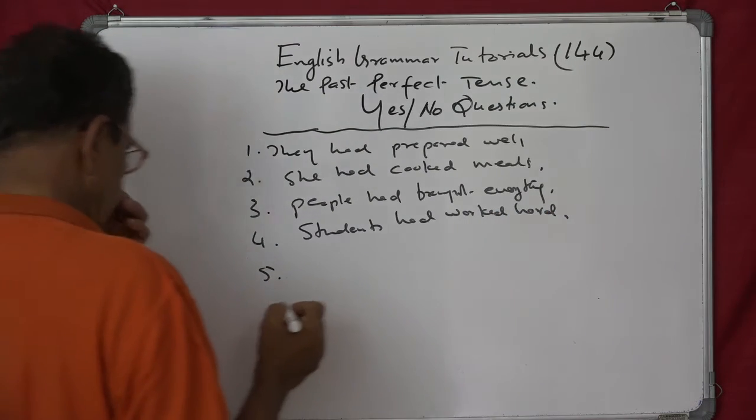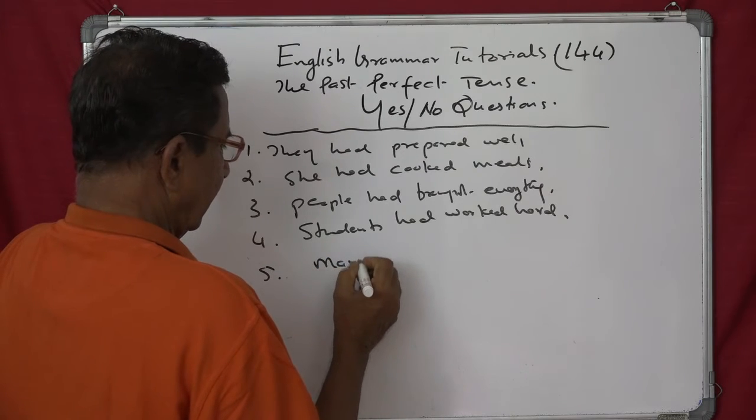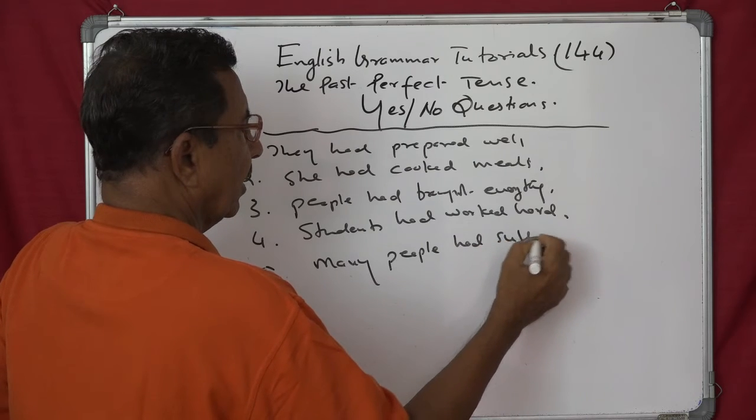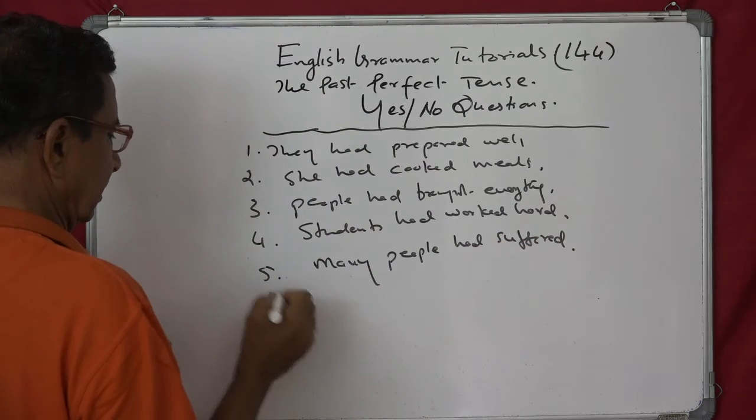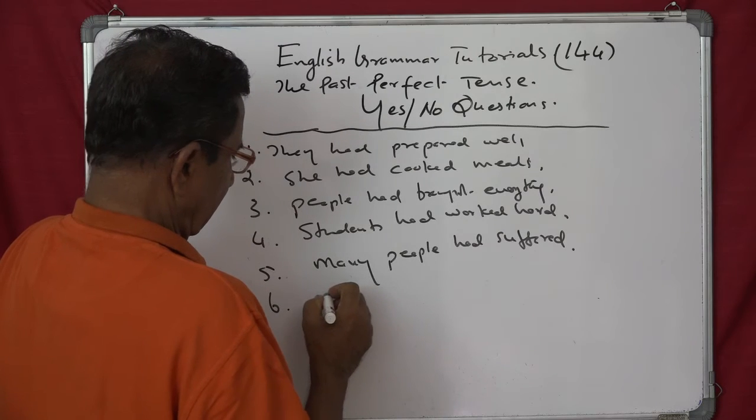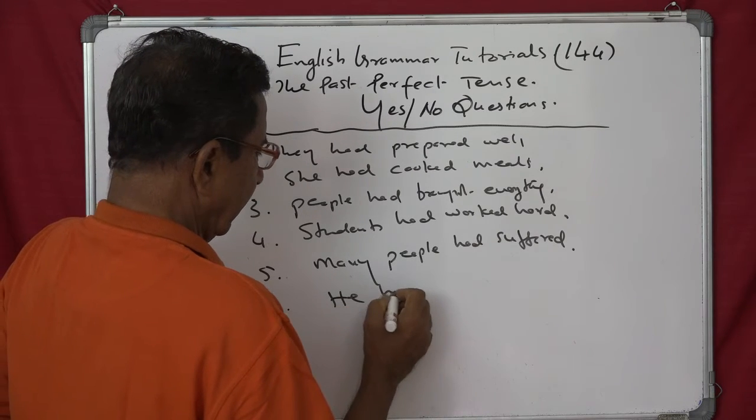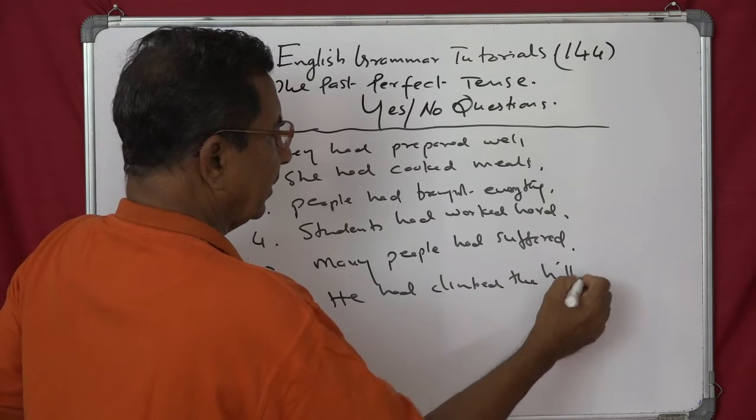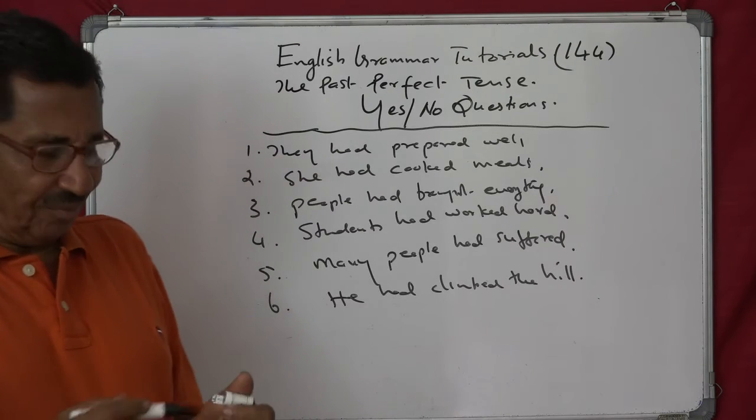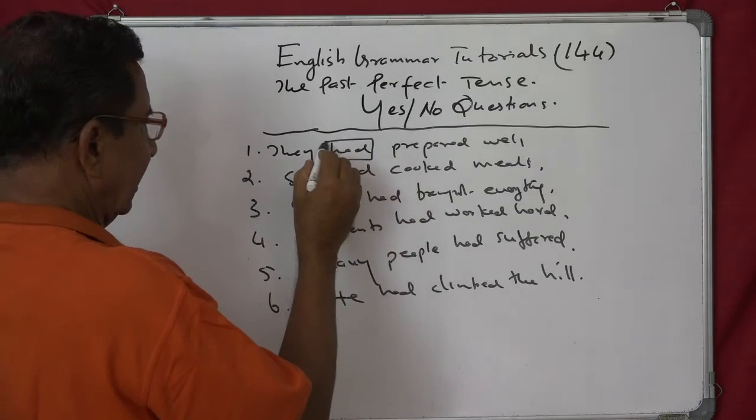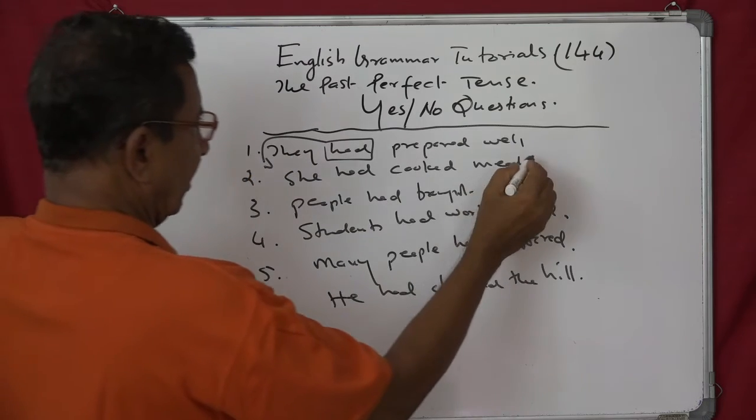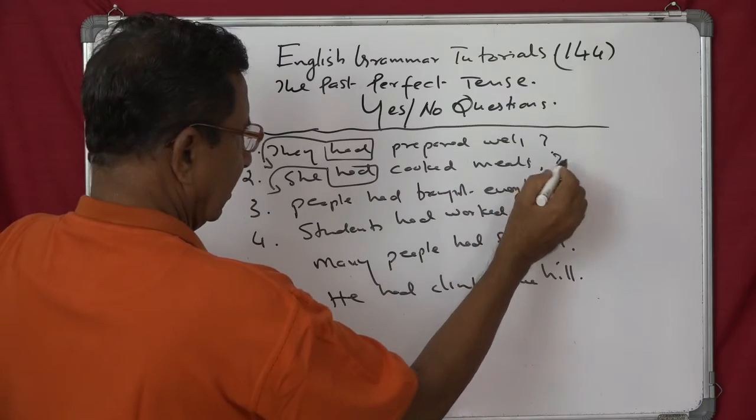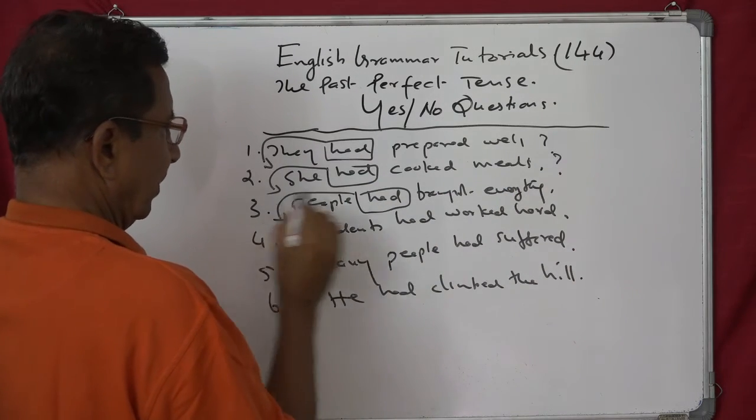He had climbed the hill. He had climbed the hill. Now what will be the yes or no questions? Very simple. We will say like this: Had they prepared well? One. Had she cooked meals? Two. Had people brought